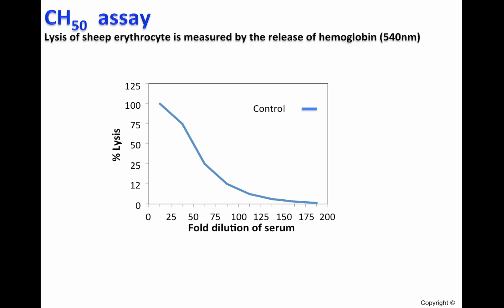Here we have an example of how the CH50 is calculated. A fixed volume of optimally sensitized IgG-coated sheep erythrocytes is added to each serum dilution. After incubation, the mixture is centrifuged and the degree of hemolysis is quantified by measuring the absorbance of the hemoglobin released into the supernatant at 540 nanometers. With this control serum, 50% lysis is obtained when the serum is diluted 50 times.